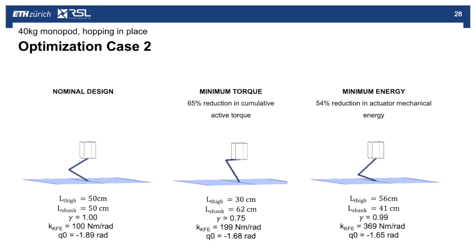Our next optimization case is a 40 kilogram monopod robot which is hopping in place. Again we start with a nominal design: equal link lengths, a transmission ratio of one, and we take a first guess at what the spring constant k at the KFE should be, as well as setting the spring set point equal to the average position of the KFE joint during the motion. We then optimize again for minimum torque, and now we have these five different optimization parameters, and we find we can actually reduce the minimum torque by 65 percent relative to that nominal design. We conduct the same analysis for the mechanical energy minimization where we find a 54 percent reduction.